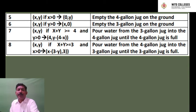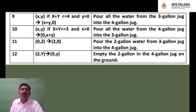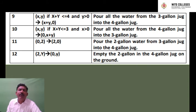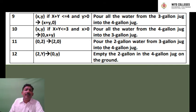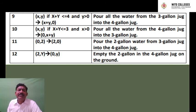Activity 9: Pour all the water from the 3-gallon jug into the 4-gallon jug. Mathematically, if x+y is less than or equal to 4 and y is greater than 0, then y becomes 0 and x becomes x+y — all water from the 3-gallon jug goes into the 4-gallon jug. Activity 10: Reversing — pour all the water from the 4-gallon jug to the 3-gallon jug, so the 4-gallon jug becomes empty: (0, x+y).